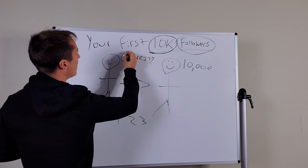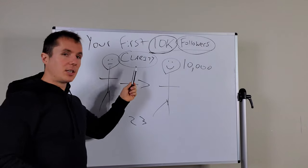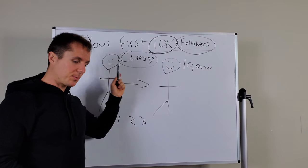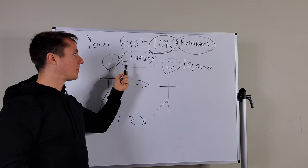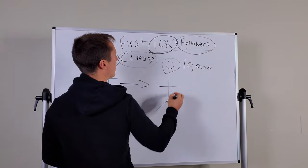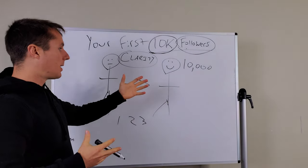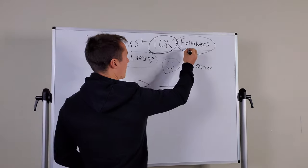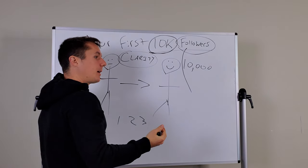So the first step you got to do is you need to get clear. We'll put a C right here for clarity. We'll just write the word clarity right there. So you can see it. You need clarity on your niche and you need clarity on not just the niche that you want to be in, not just the specific person that you want to help, but you need to get specific on what problems they have. So what problems do these 10,000 followers have? Maybe your target niche is moms.